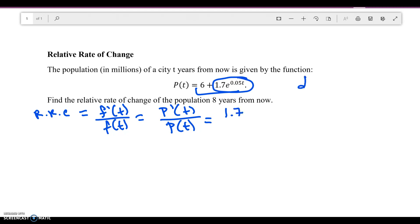So I'm going to have e to the 0.05 t, and then I'm going to multiply it by the derivative of the inside, which is this part, which is going to be 0.05. Then I'm going to divide it by 6 plus 1.7 e to the 0.05 t.